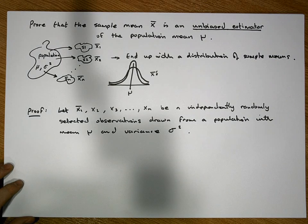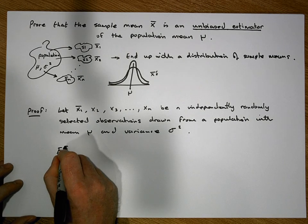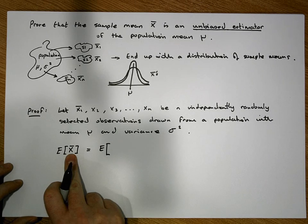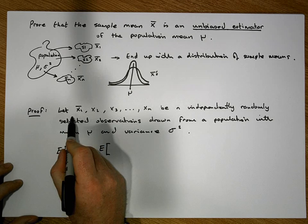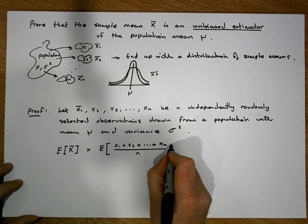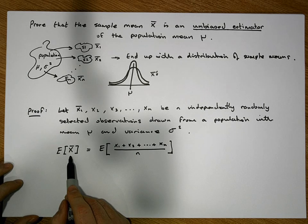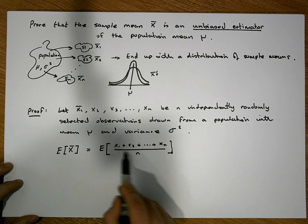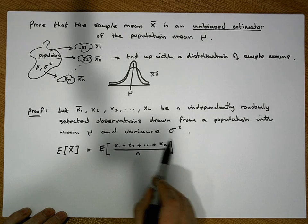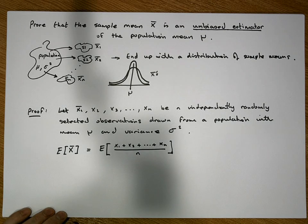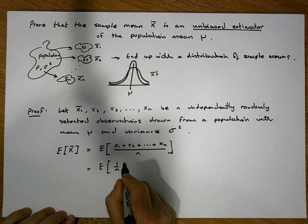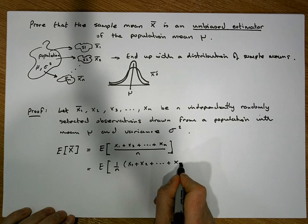So let's calculate what the expected value of x-bar is. The expected value of our sample mean is simply equal to the expected value of what feeds into the sample mean: x1 plus x2 plus all the way down to xn, divided by n, the sample size. By our laws of expectation — a constant times any random variable equals the constant times the expected value — this is the same as the expected value of 1/n times (x1 + x2 + ... + xn).